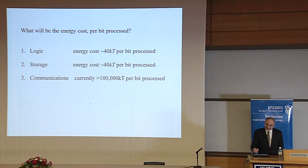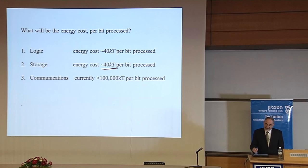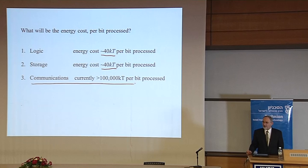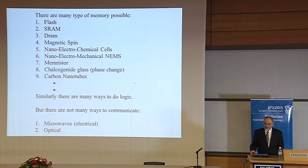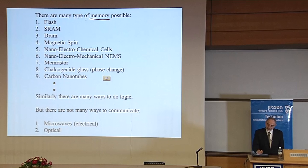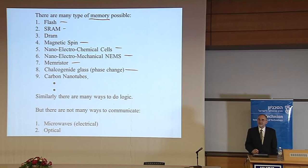Looking at the different processes: it seems we don't have to be so inefficient, particularly for storage — some argue we're getting very close to the theoretical limit there. Logic is somewhat similar. But when we communicate, we tend to be very inefficient, far greater than the theoretical limit. Why is communication, even over 10 microns on a chip, such a big problem? We have many options for memory and storage: flash memory, static RAM, magnetic spin hard disks, nano-electrochemical cells, nano-mechanical gadgets, memristors, phase change memory, and more.